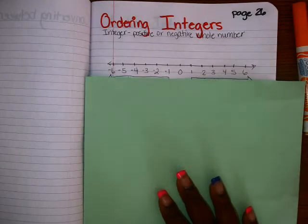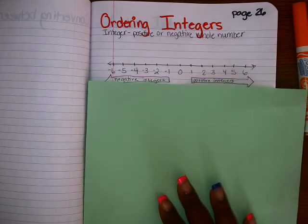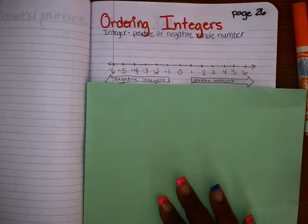The integers to the left are the negatives — those are negative numbers — and the integers to the right are positive.